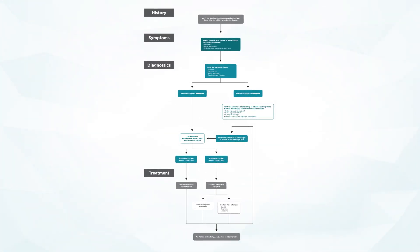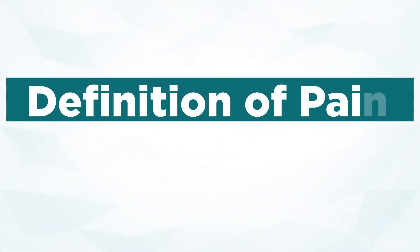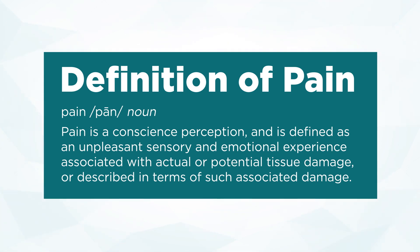Things that may be useful for us to discuss before we go down the algorithm pathway are some definitions. Pain is a conscious perception and is defined as an unpleasant sensory and emotional experience associated with actual or potential tissue damage or described in terms of such associated damage. Therefore, the anesthetized patient who is not conscious does not experience true pain; the same pathways are utilized but are more appropriately referred to as noxious stimuli, because this is an unconscious perception utilizing those nociceptive pathways.